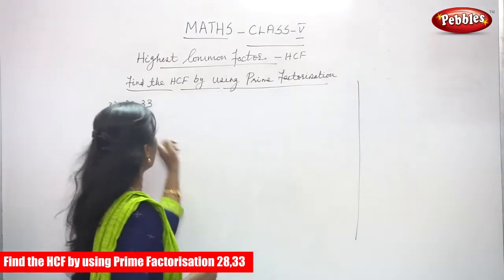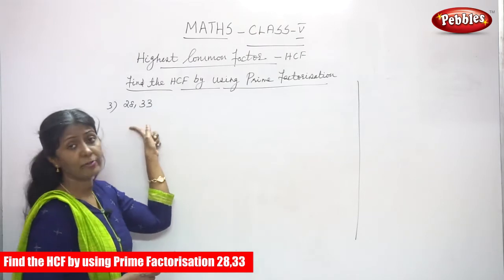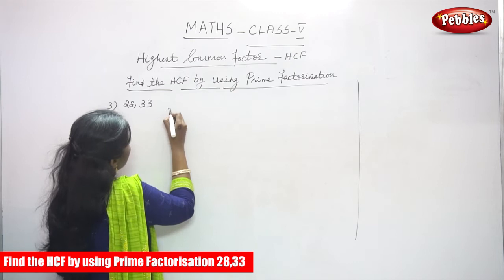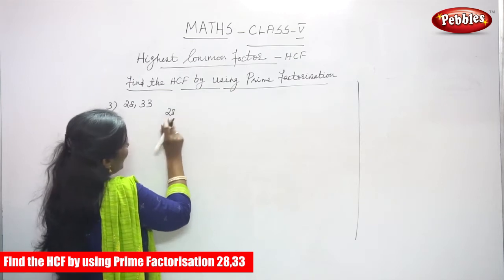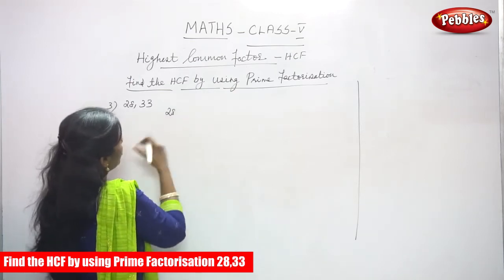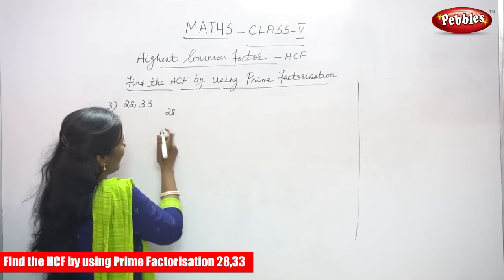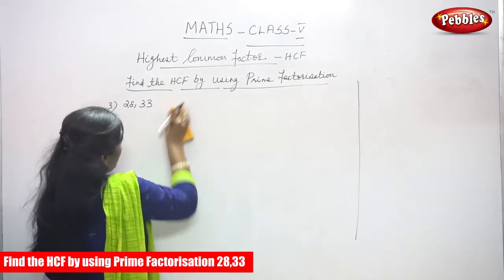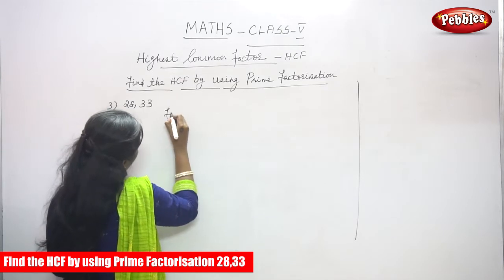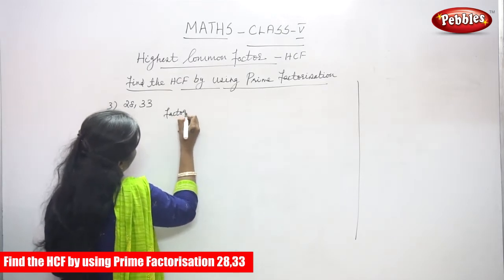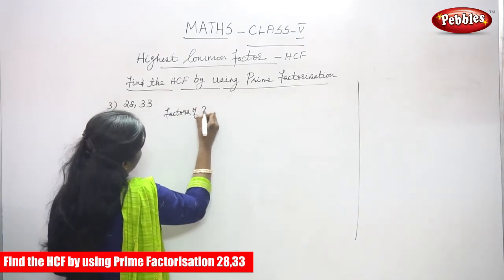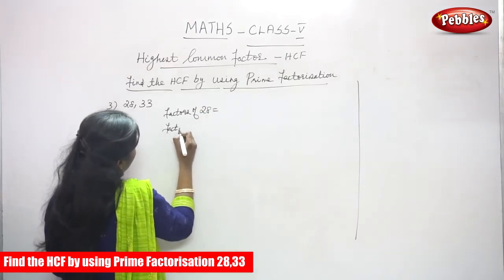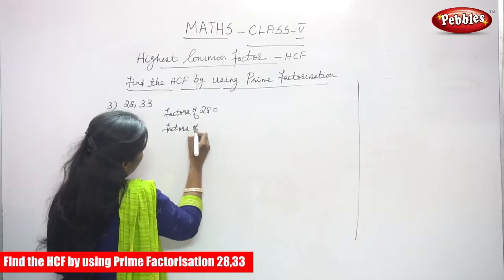The first number is 28. You will find the factor of 28 first, and after that we will go for 33. Next is the factor of 33.